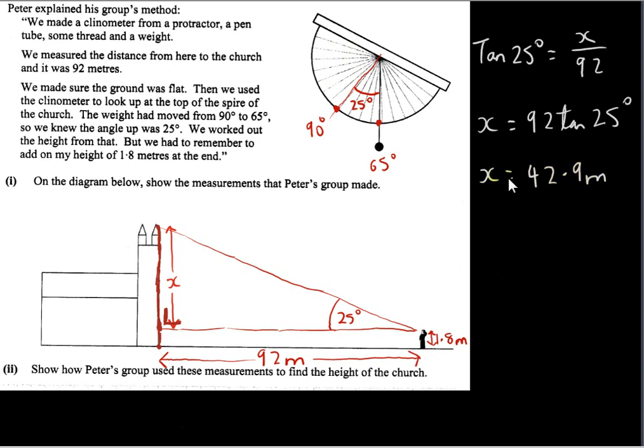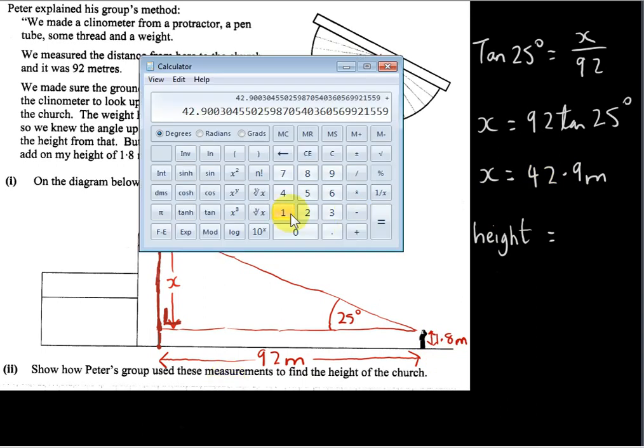And this is in meters. So the height of the church, then, is just got by adding 1.8 onto 42.9. So we get 44.7.